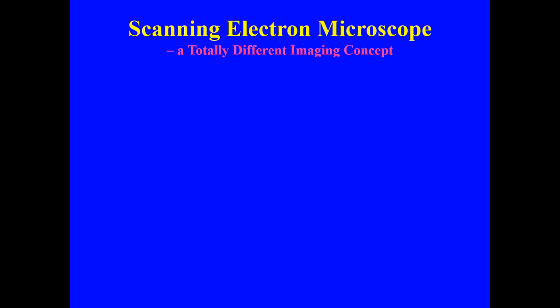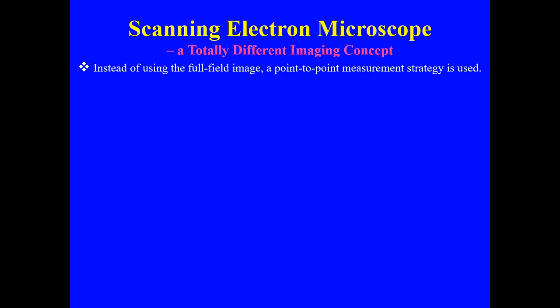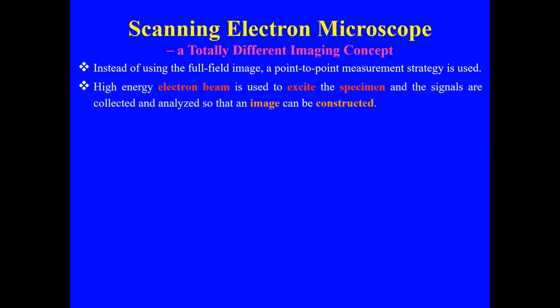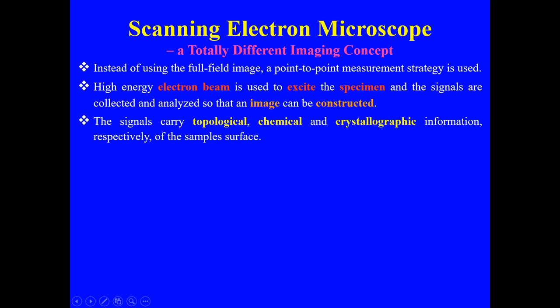The SEM uses a totally different imaging concept than the optical microscope. Instead of using a full-field image, a point-to-point measurement strategy is used, along with a high-energy electron beam to excite the specimen. The signals collected and analyzed are used to construct an image. These signals carry topological, chemical, and crystallographic information about the sample surface.